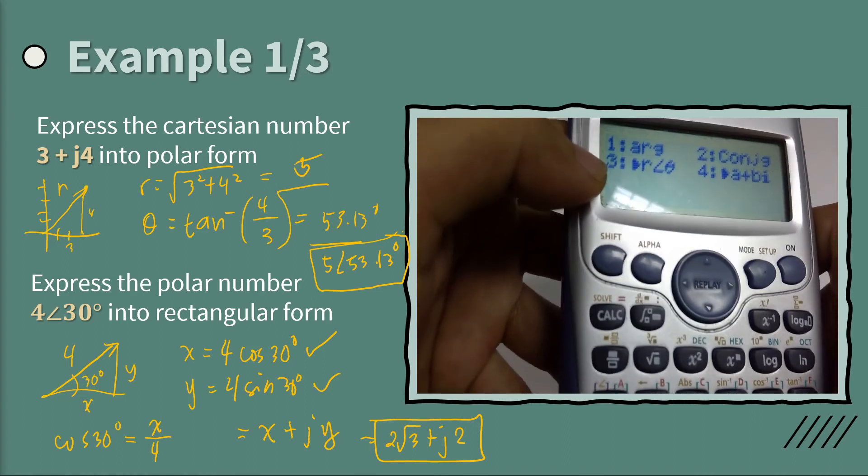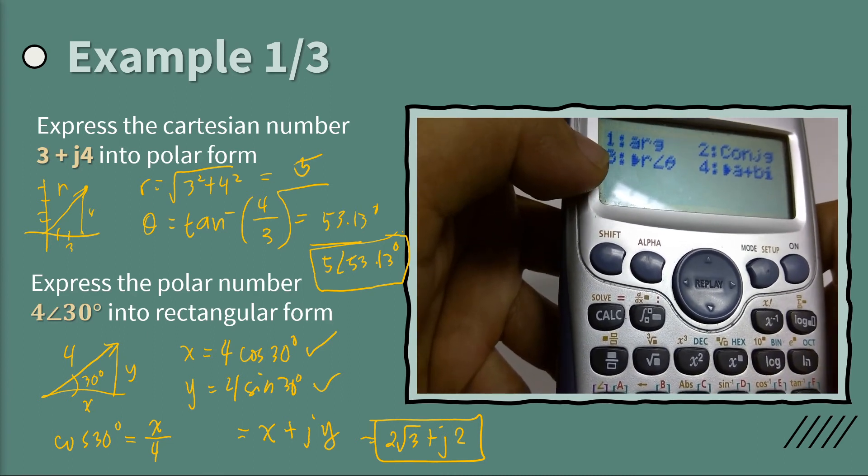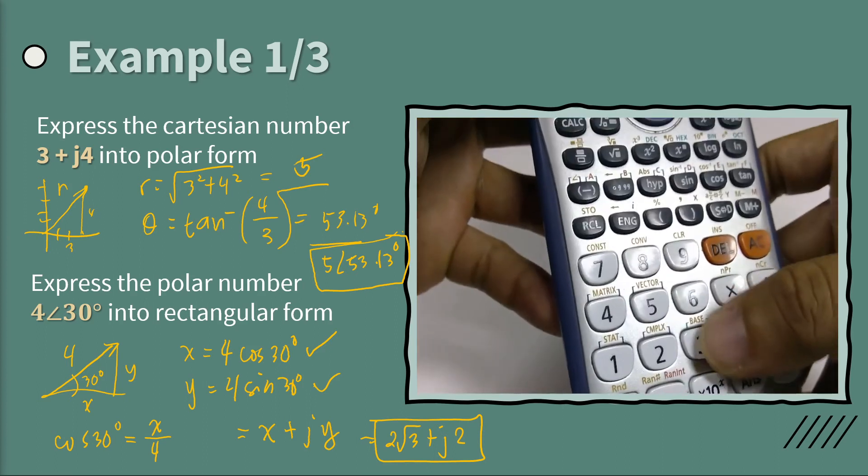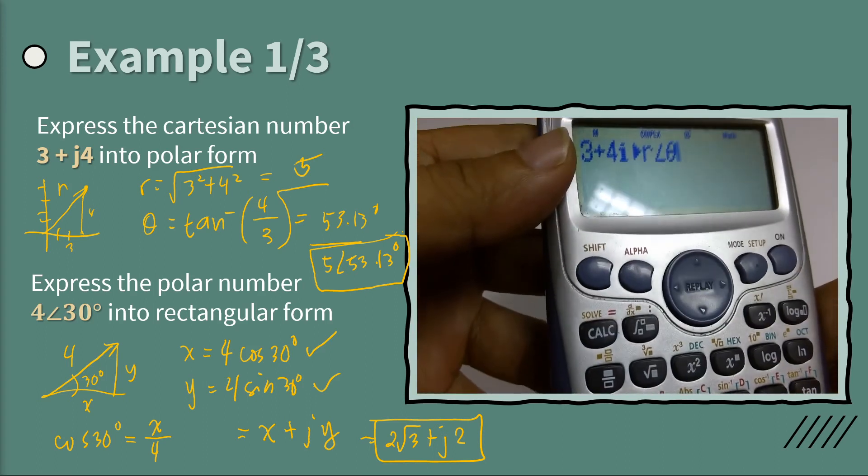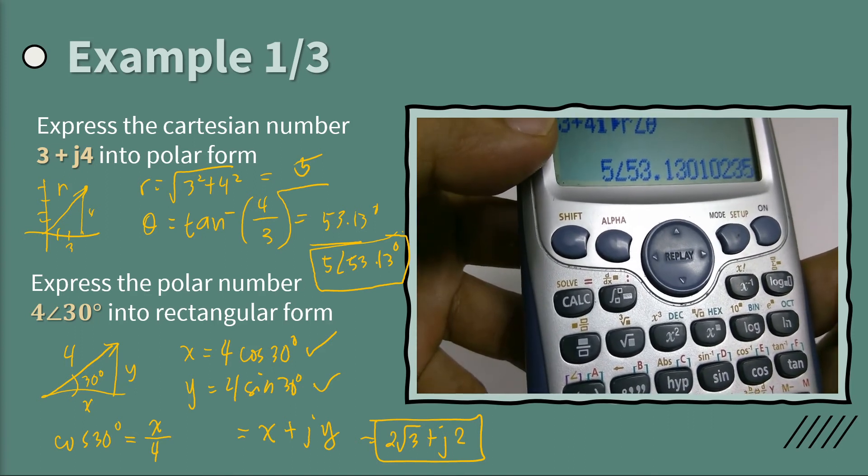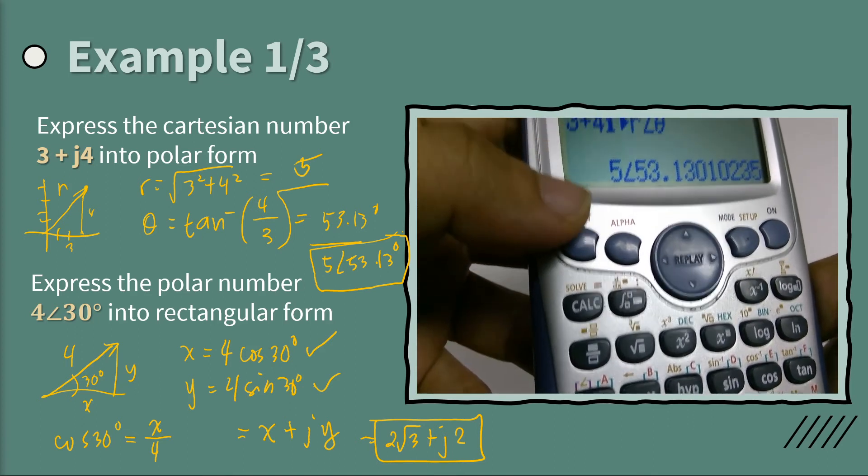Sorry, we wanted rectangular form into polar form. So the polar form is r angle theta. So press number 3 and you will see this form. Then press enter. So we have 5 angle 53.13 degrees, which is the same as our solution.